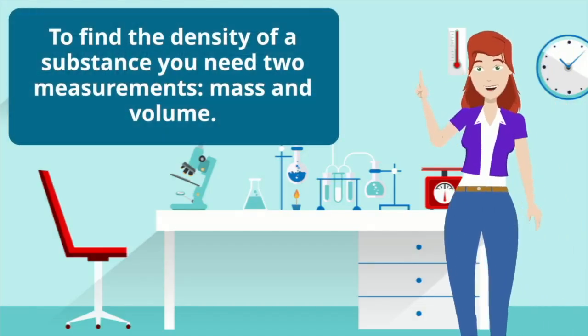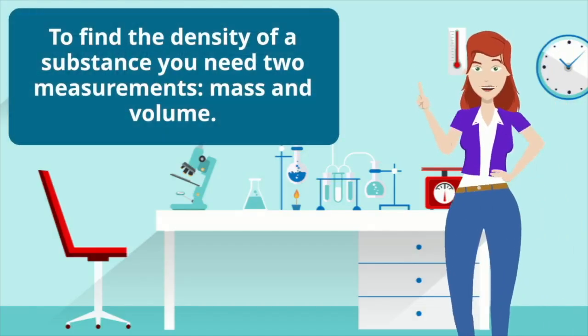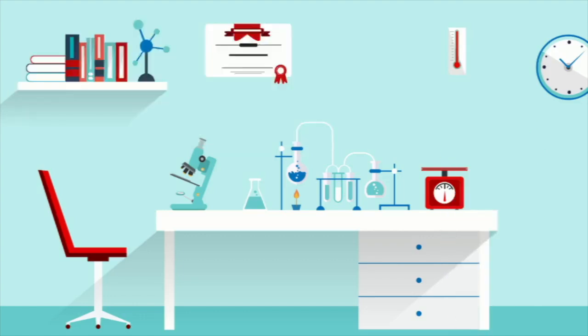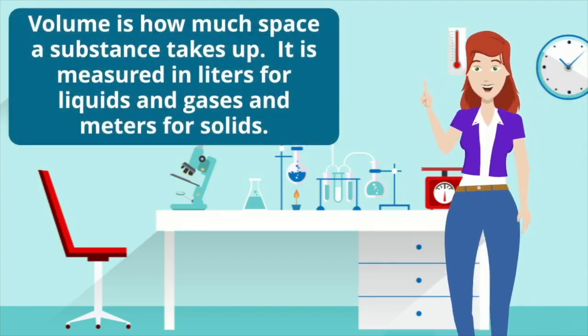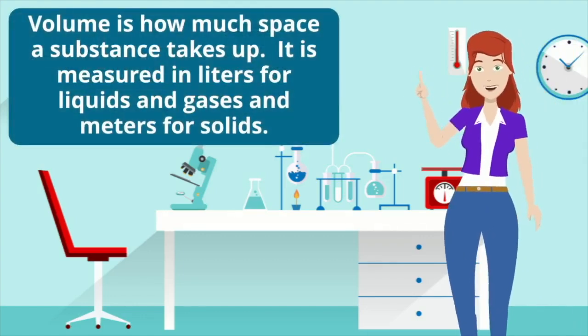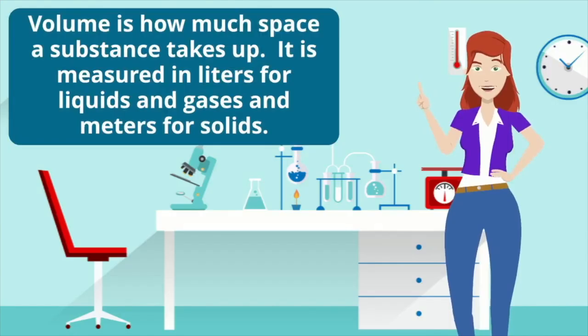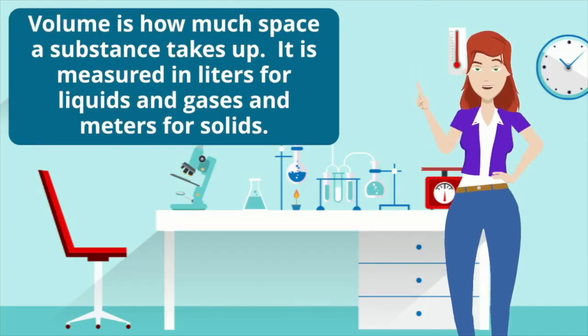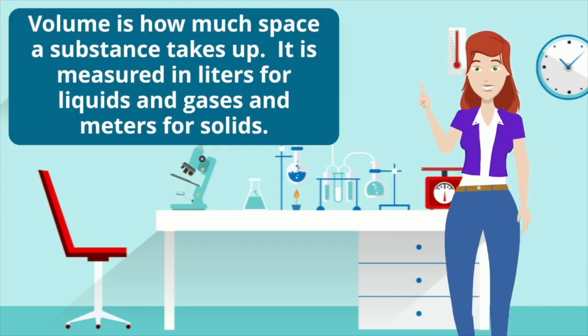To find the density of a substance, you need two measurements: mass and volume. Volume is how much space a substance takes up. It is measured in liters for liquids and gases and meters for solids.